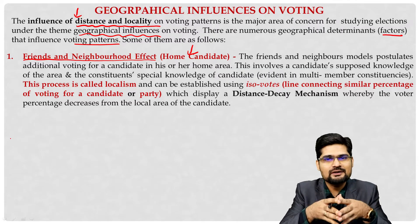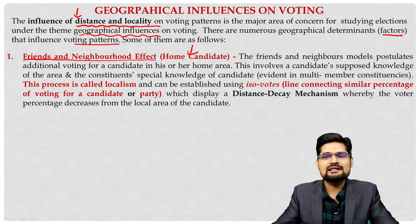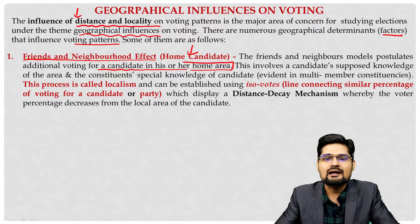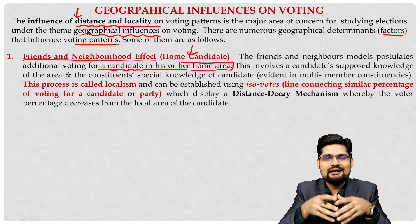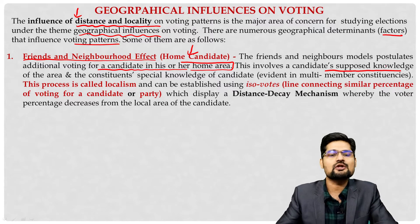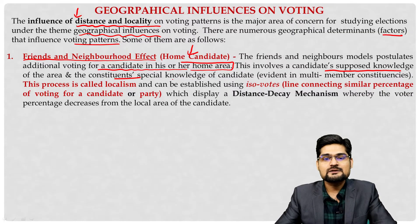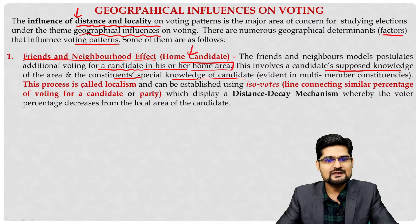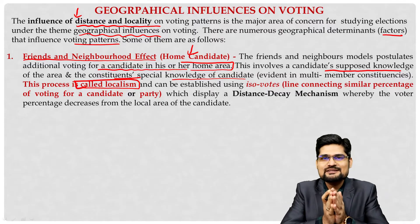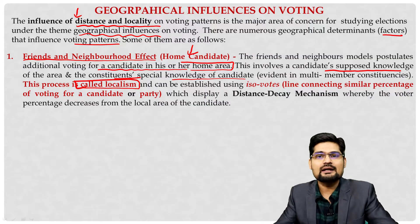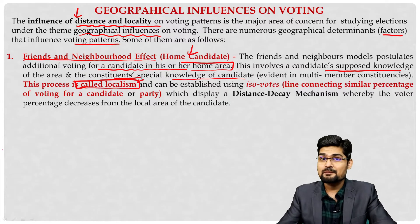The friends and neighborhood model gives you an idea of voting for a candidate in his or her home area. If you are a candidate and this is your locality, you influence people of your own locale. This involves the candidate's supposed knowledge of the area, their constituents, special knowledge of the candidate, and it is especially evident in multi-member constituencies. This process is also called localism — a local candidate is aware of the community, their behavior, voting patterns, ideas and beliefs.